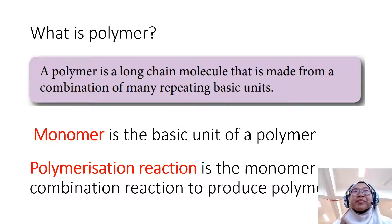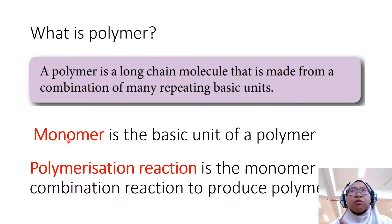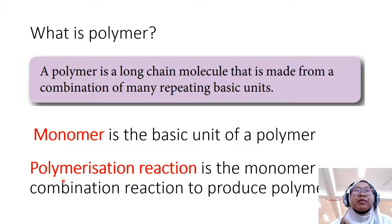What is a polymer? A polymer is a long chain molecule that is made from a combination of many repeating basic units. Those basic units are called monomers — mono meaning one. Polymerization reaction is the monomer combination reaction to produce polymer.